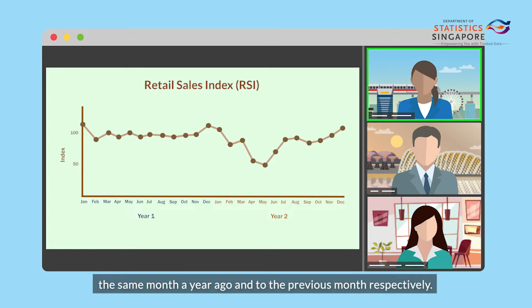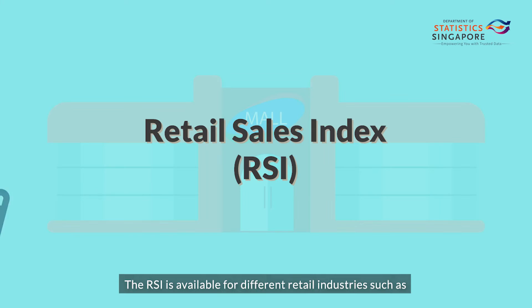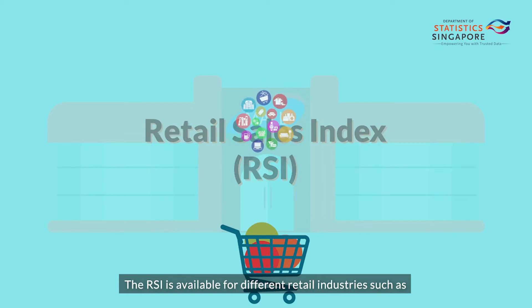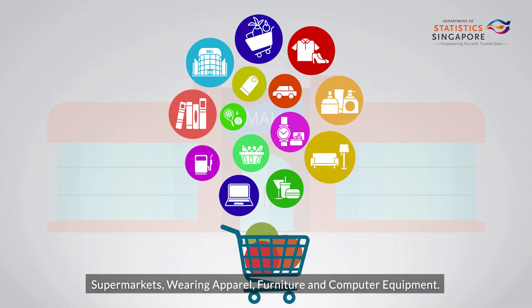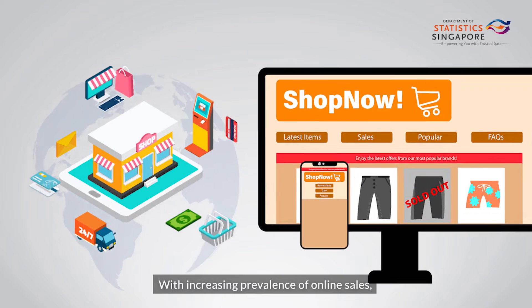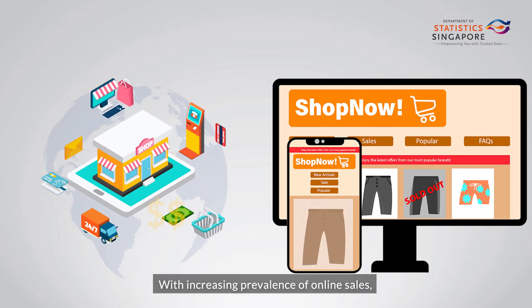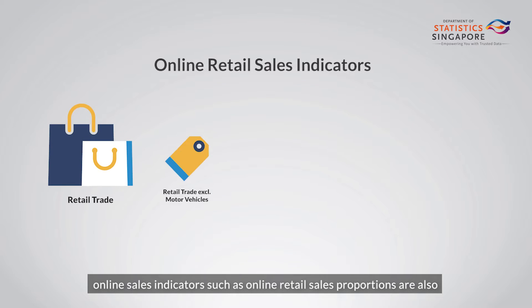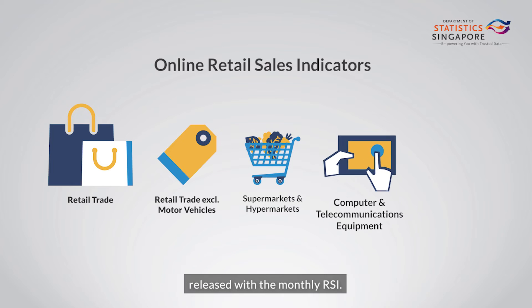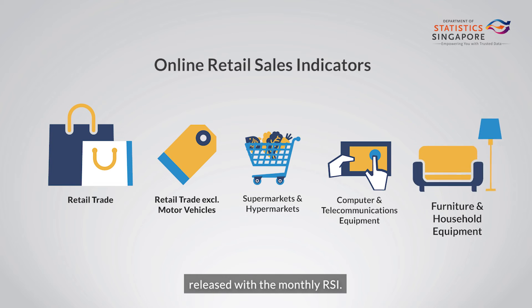The RSI is available for different retail industries, such as supermarkets, wearing apparel, furniture, and computer equipment. With increasing prevalence of online sales, online sales indicators such as online retail sales proportions are also released with the monthly RSI.